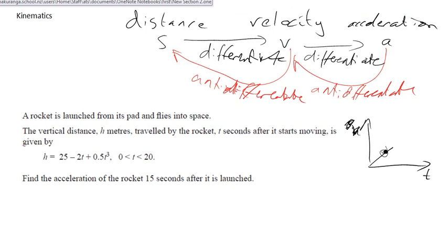So if I differentiate distance, I get velocity. If I differentiate velocity, I get acceleration. If I have acceleration and want to work out velocity, I can anti-differentiate. Remember, I need some information to get the constant. If I've got the velocity and want to get the distance, I can anti-differentiate and get that.